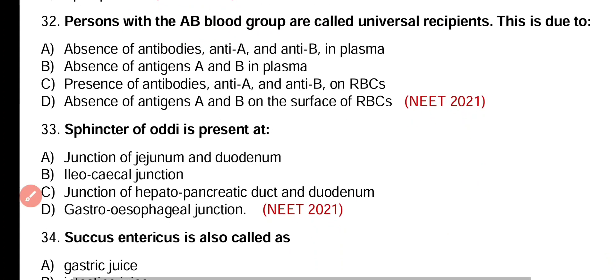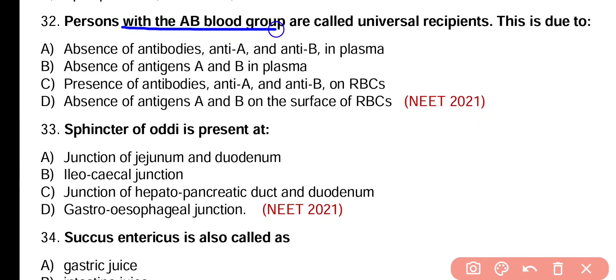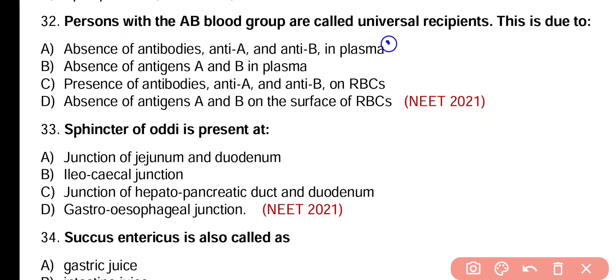Question number 32. Persons with AB blood group are called universal recipients. This is due to: absence of antibodies anti-A and anti-B in the plasma, absence of antigen A and B in the plasma, presence of antibodies anti-A and anti-B on RBC, or absence of antigen A and B on the surface of RBC? Correct answer is option A. Blood group AB is called universal recipient because the person has no anti-A and anti-B antibodies in the plasma.